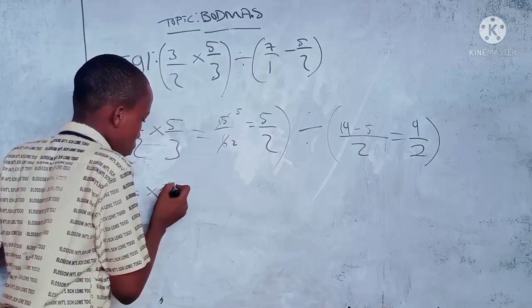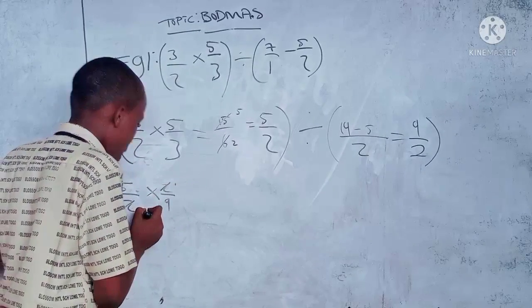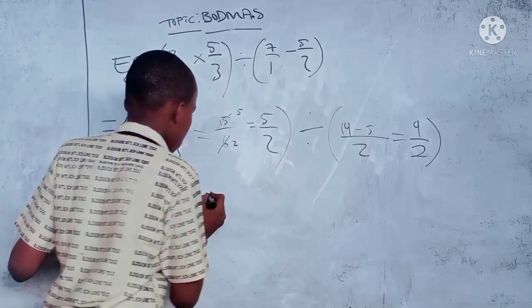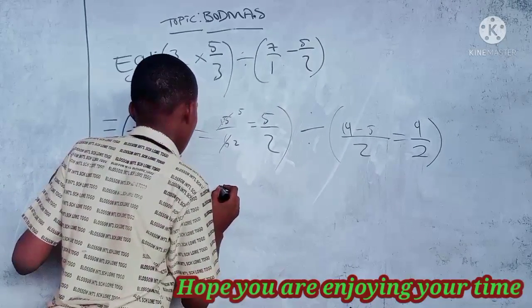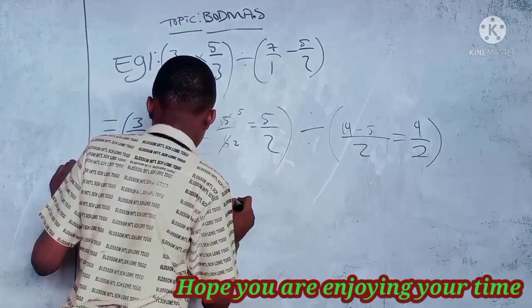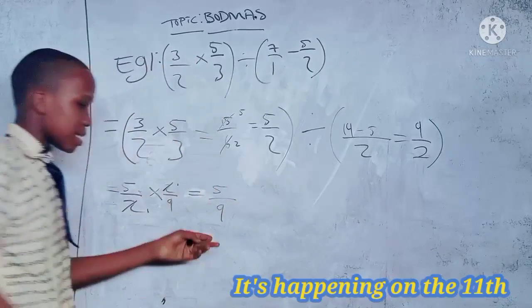Two divided by two equals one, equals five over nine. This is our answer.